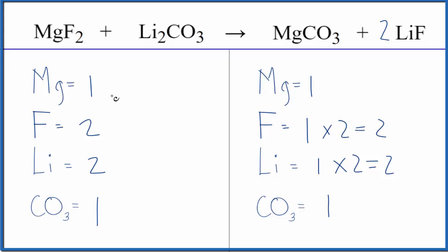If you're trying to figure out the type of reaction, you can see that we have the magnesium here with the fluorine, but over here it's with the carbonate. And now the lithium here, that's with the fluorine and lithium fluoride. So these two, they switched places. So this is a double displacement reaction.